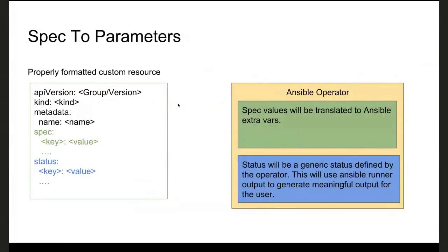Next, how do we pass parameters to Ansible based on the spec that the user defines for their resource? We've determined that the spec key-value pairs map well to Ansible's extra vars. This allows us to say a user defines their spec, and then we tell Ansible what those user-defined parameters are.